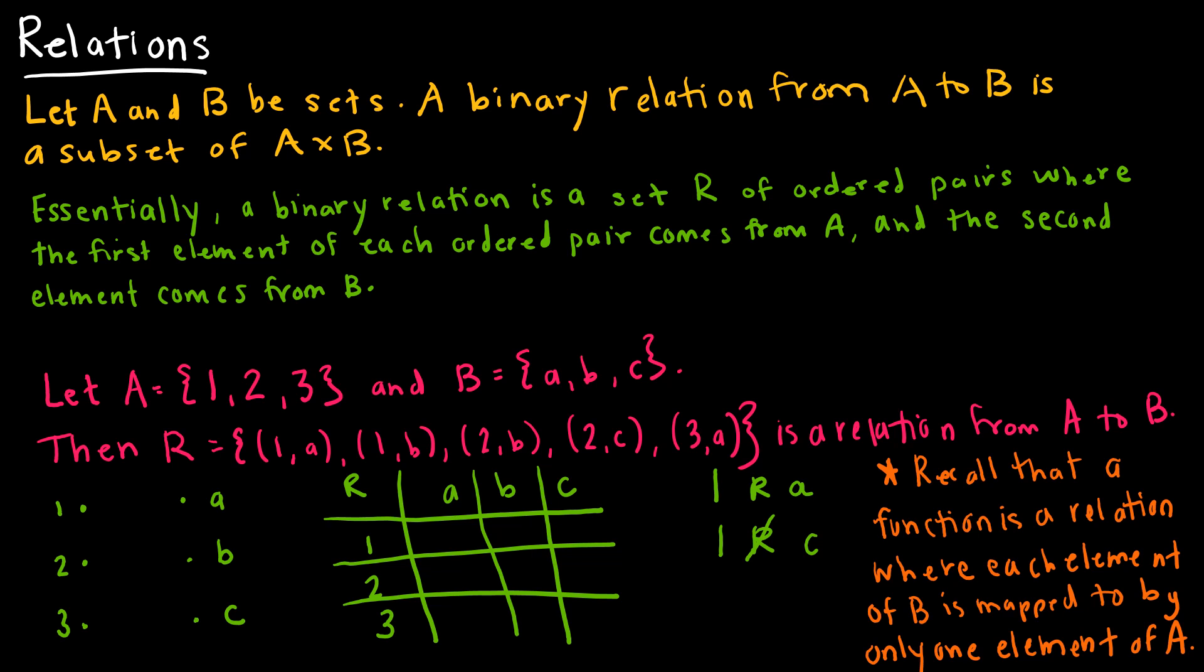For instance, if I have that A is the set containing 1, 2, 3 and B is the set containing a, b, c, then notice it gives me a relation and the relation includes in this case five ordered pairs. Now keep in mind it doesn't include all of the ordered pairs 1a, 1b, 1c, 2a, 2b, 2c, 3a, 3b, 3c, because it's a subset of A times B, which means it could contain all of them but it doesn't have to.